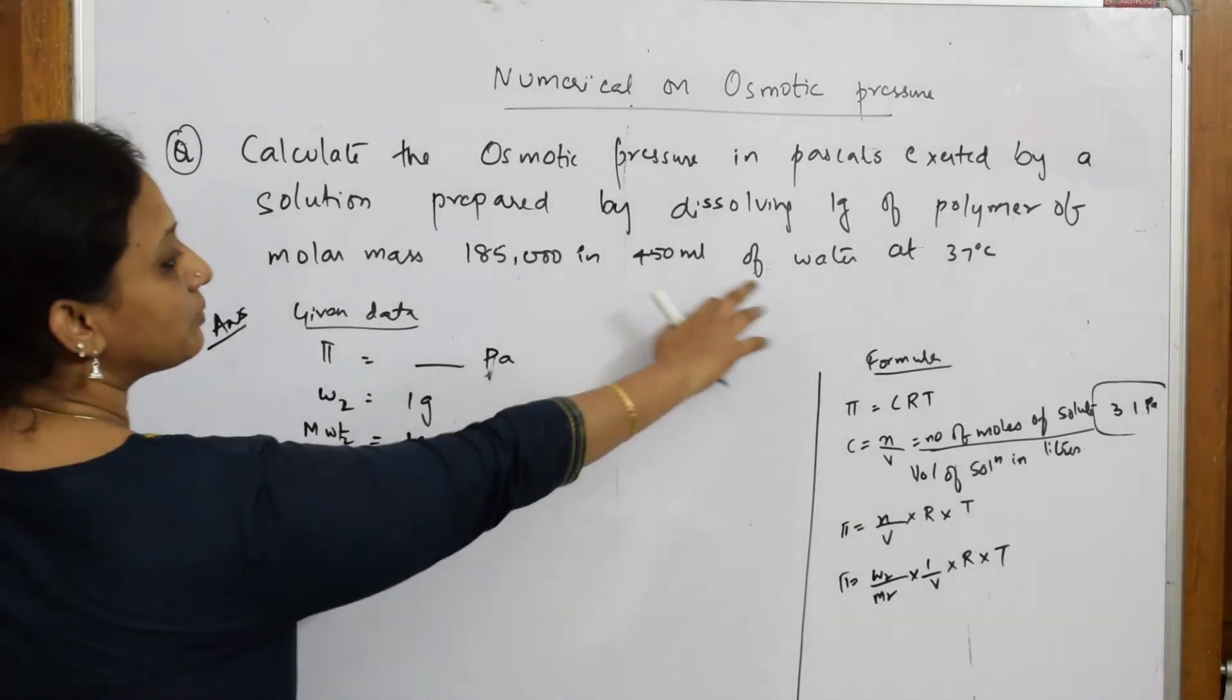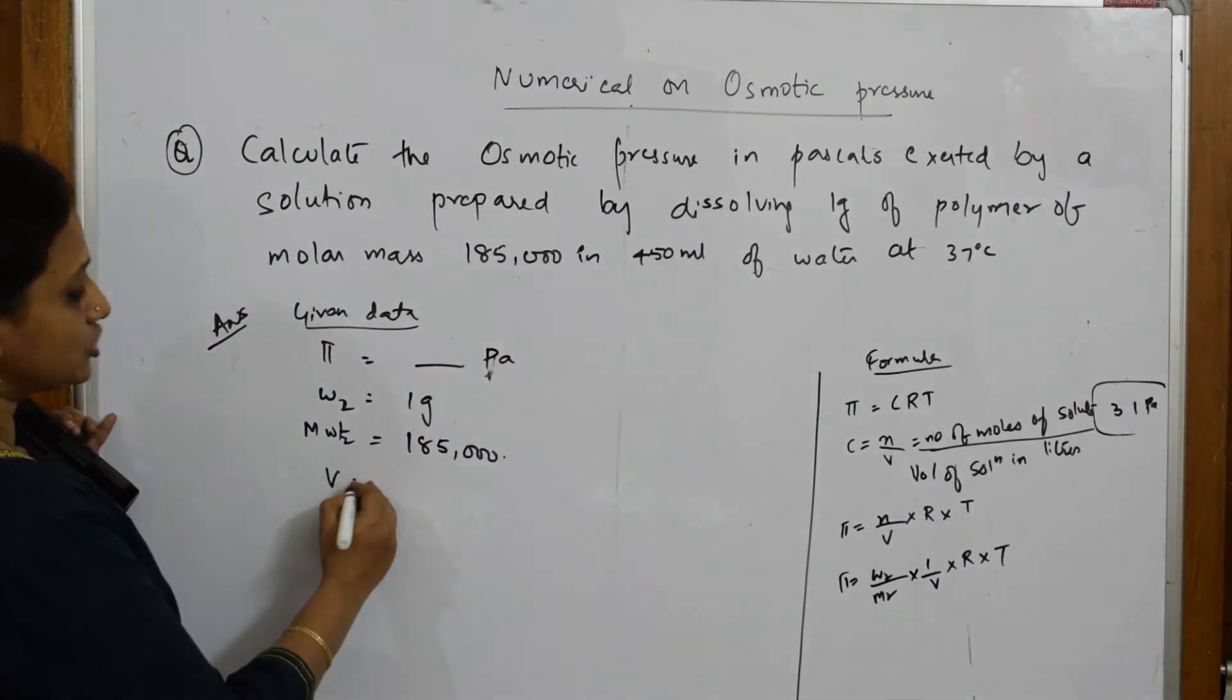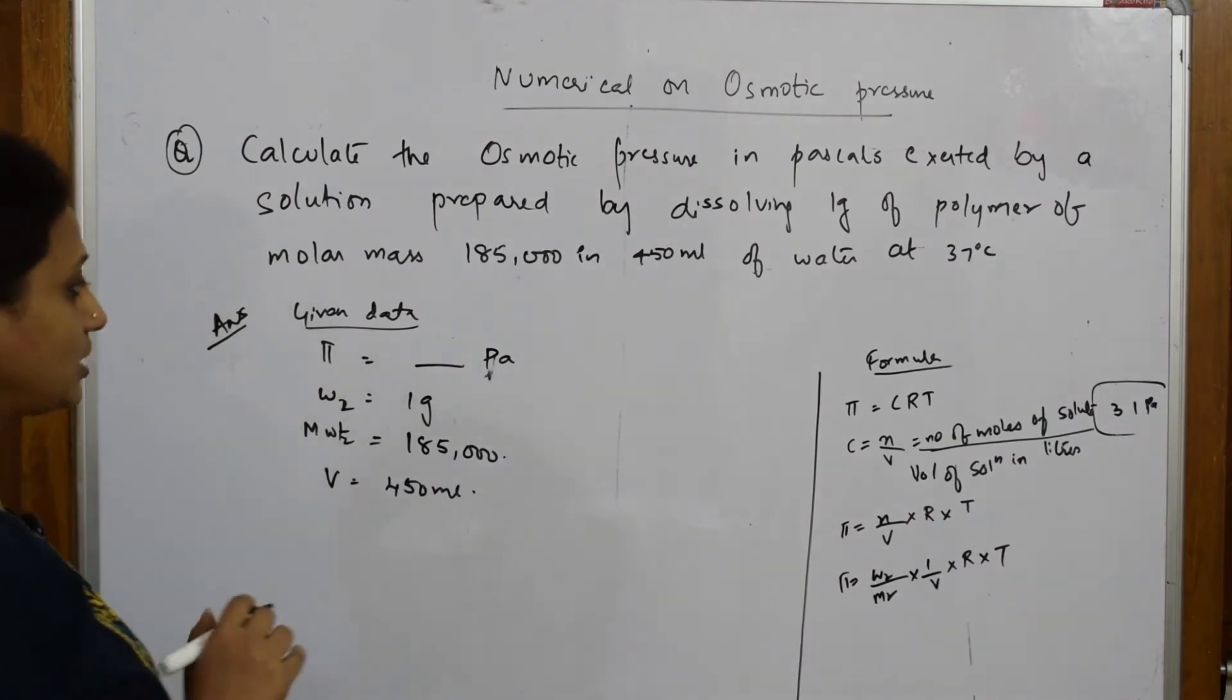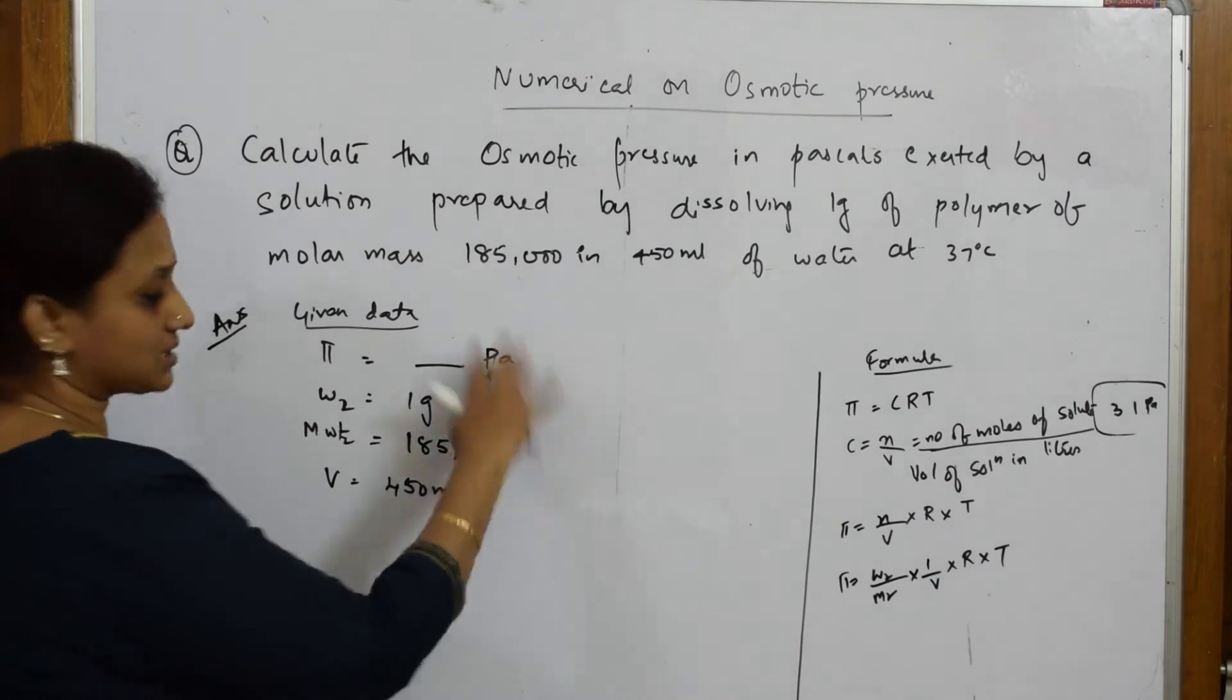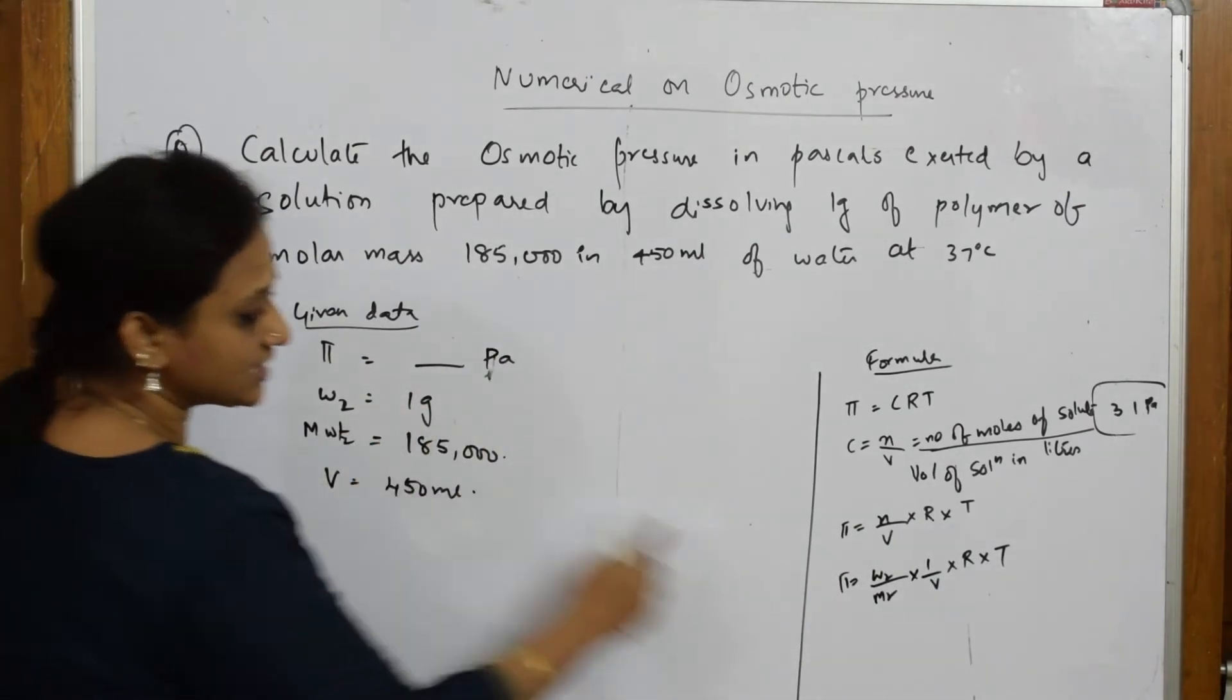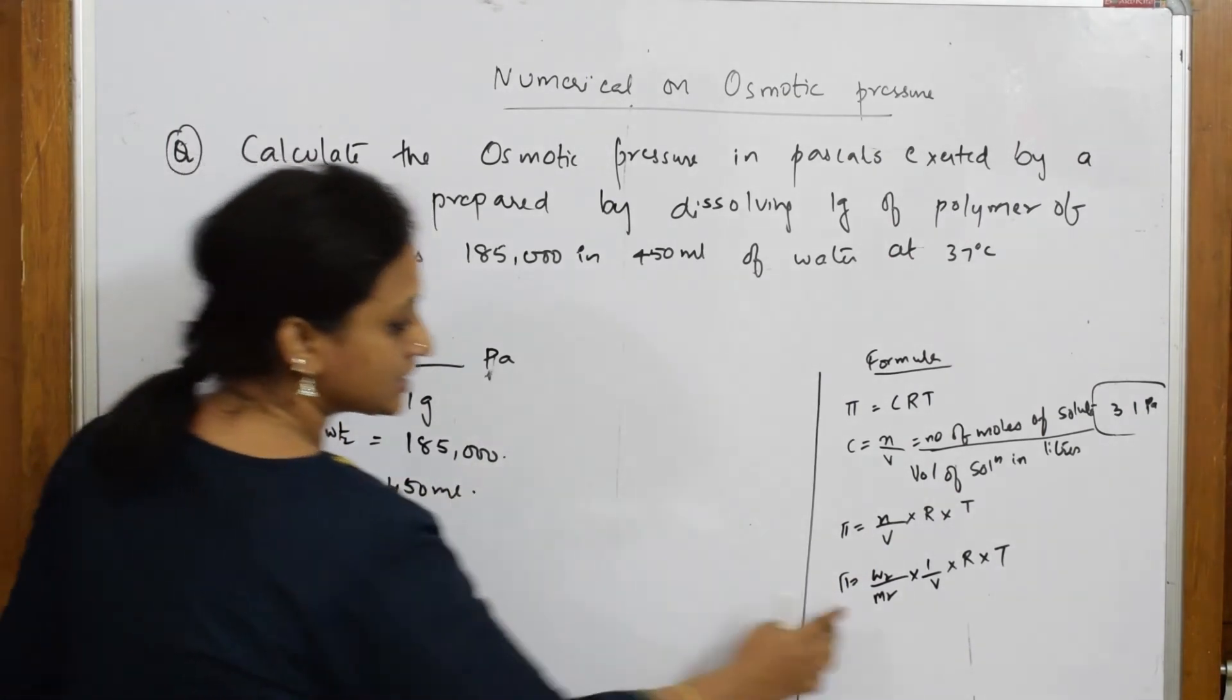Then in 450 ml of water. Volume given to me is 450 ml. Now, be careful. What did they say? I have to find the answer in pascals. Weight is given. Molecular weight is given. So weight I can substitute here. Molecular weight I can substitute here.